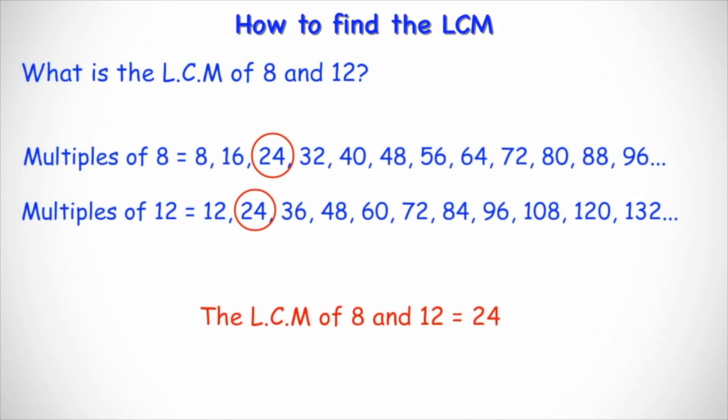Notice also that 48 also appears in both lists, but that is not the lowest. That is not the smallest, so we don't regard that. Also note here that eight and 12 are connected as they are both even numbers and they both appear in the four times table.